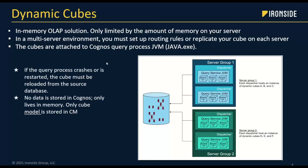Dynamic Cube is an in-memory OLAP solution — it is a true cube. One important thing to know is that it is attached to the actual Java process in Cognos, and that's where it resides. In multi-server situations, each server has its own Dynamic Cube attached to it, and the cube itself must be started and loaded on each server in a multi-server environment. You have to set up certain rules to handle multi-server caching, but because it's all in memory, it's extremely fast — you're really only limited by the volume of RAM on your server.